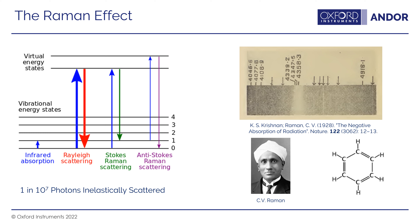Over to the right, we have one of the first Raman spectra obtained by C.V. Raman in 1928. It's a Raman spectrum of benzene, published in Nature, titled 'A New Type of Secondary Radiation.' So you can see one of the first Raman spectra ever captured.